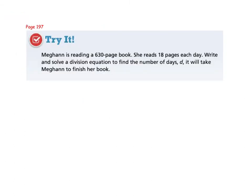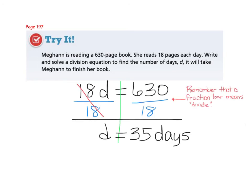Pause the video for a few moments and try the try-it at the bottom of page 197, then restart and check to see how you did. So if Megan is reading a 630-page book and reads 18 pages per day, we wanted to find out how many days it will take her to finish her book. 18 pages per day times the number of days is equal to the total number of pages in her book. Divide both sides by 18 using your division property of equality, that gets your variable D by itself, and you find out it will take her 35 days.